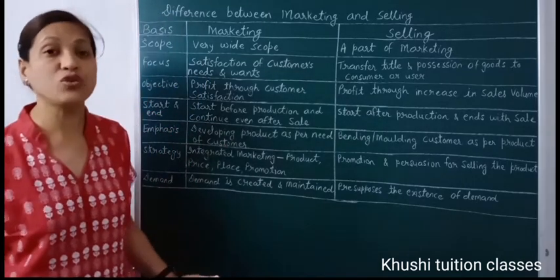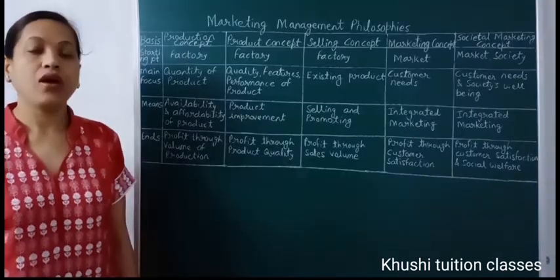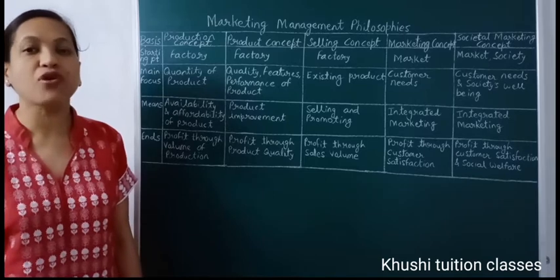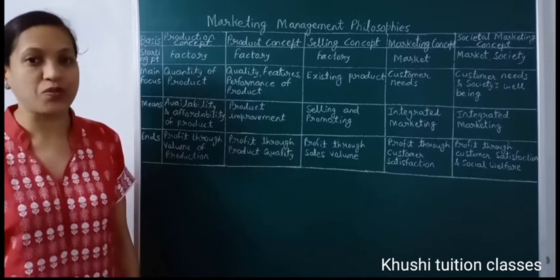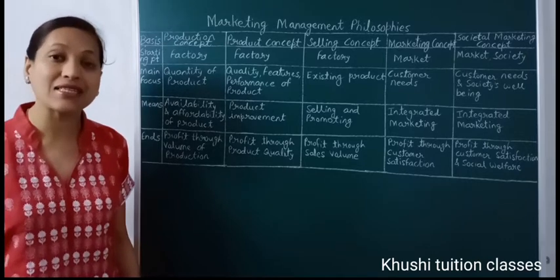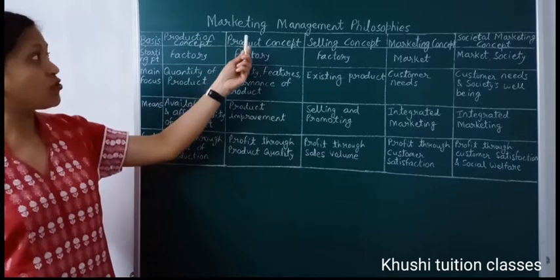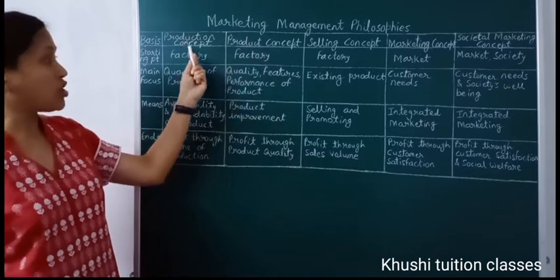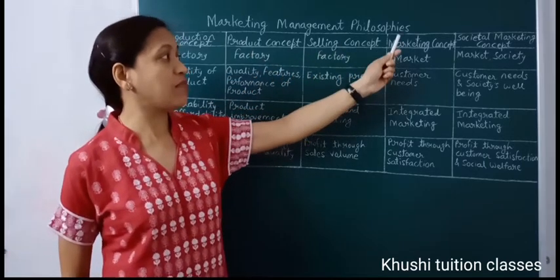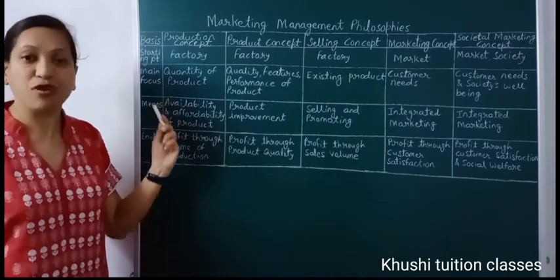So I hope you have understood the difference between marketing and selling. Now marketing management involves activities related to exchange of goods from manufacturer to consumer. A marketer can get guidelines from five concepts or philosophies of marketing management: production concept, product concept, selling concept, marketing concept, and societal marketing concept.